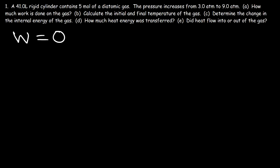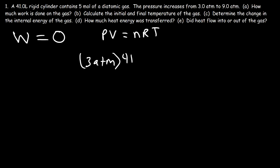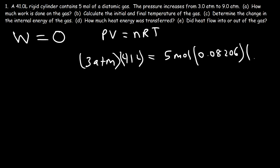Now let's move on to part B: calculate the initial and final temperature of the gas. We can use the ideal gas law PV = nRT. The initial pressure is 3 atm, the volume is 41 liters, n is 5 moles, and R is 0.08206 L·atm/mol·K. Solving for T: 3 times 41 divided by 5 divided by 0.08206 gives an initial temperature of 300 Kelvin.